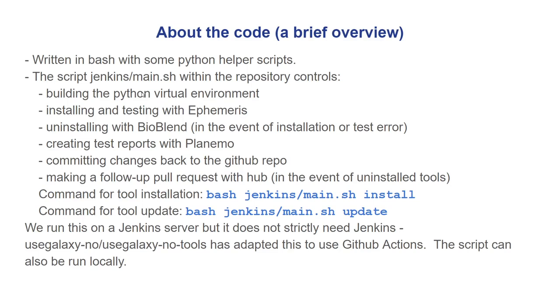main.sh takes one positional argument, which could be install or update. We use Jenkins, but the script can be run locally, and has also been adapted by Galaxy Norway to use GitHub Actions instead of Jenkins.